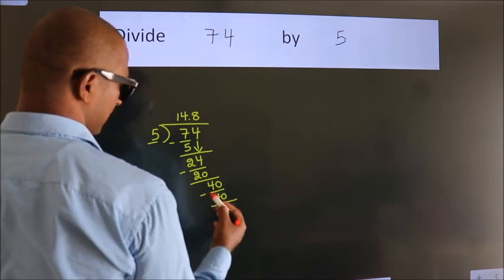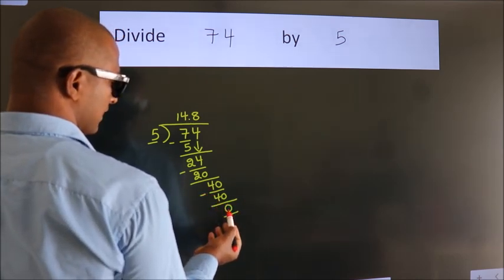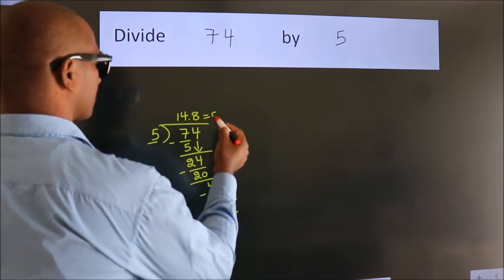Now we subtract, we get 0. We got remainder 0. So this is our quotient.